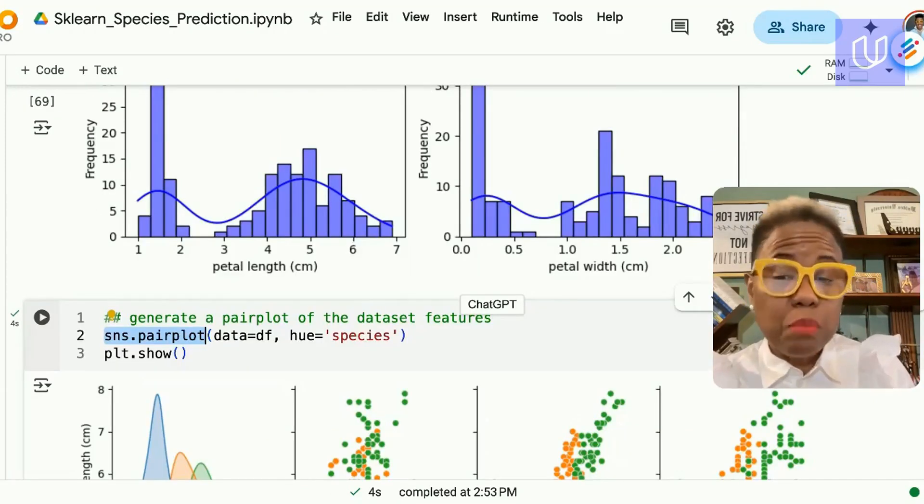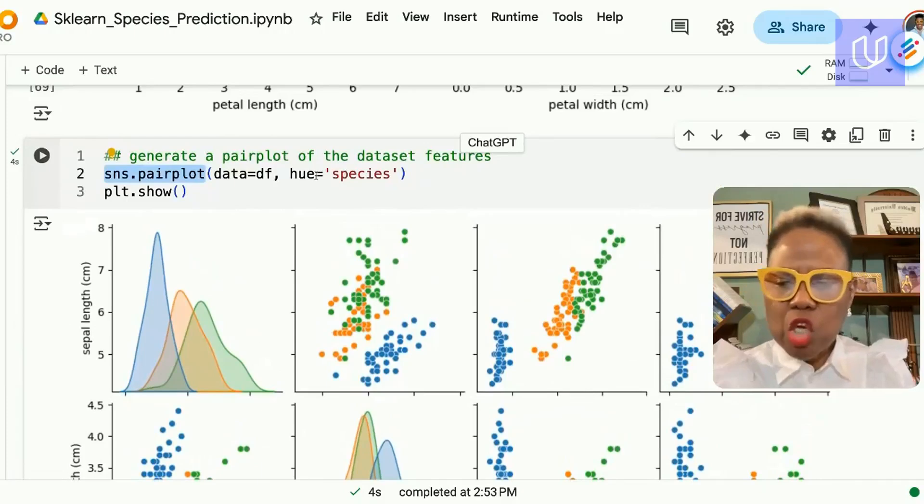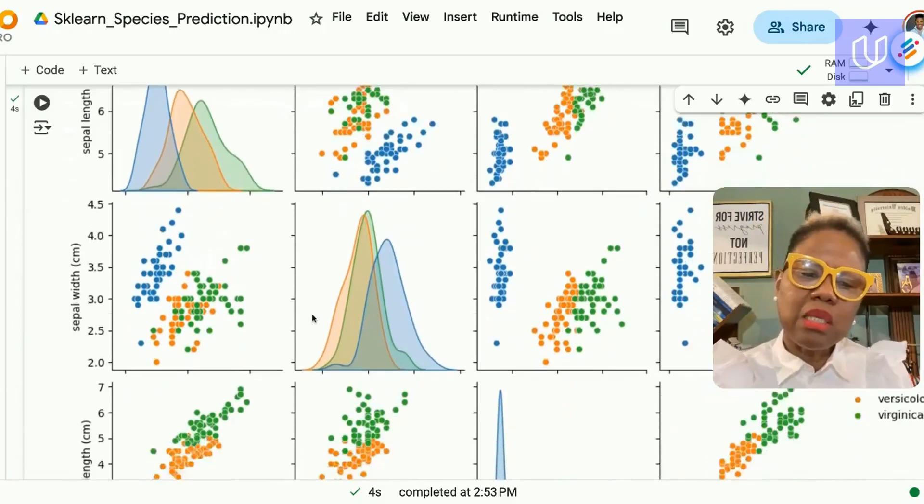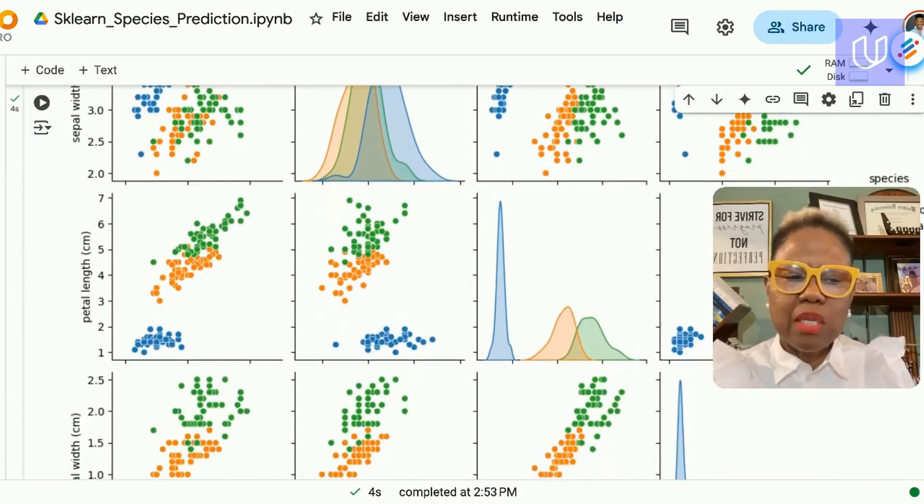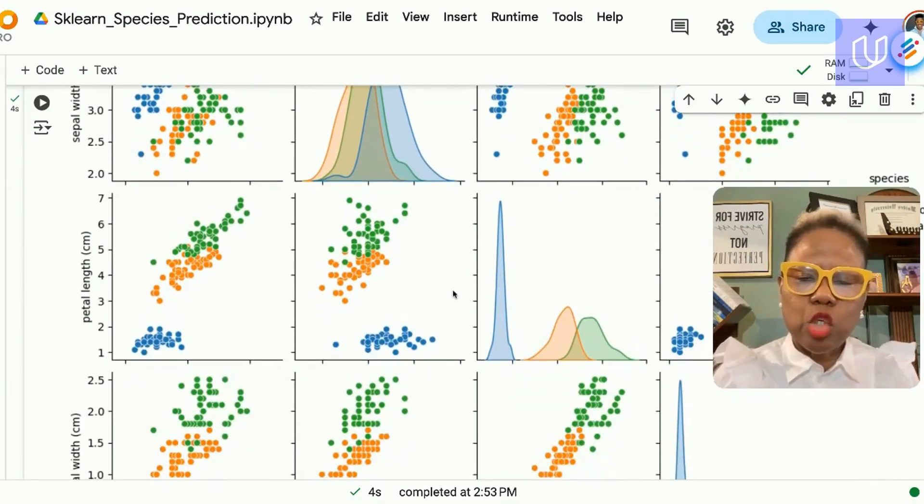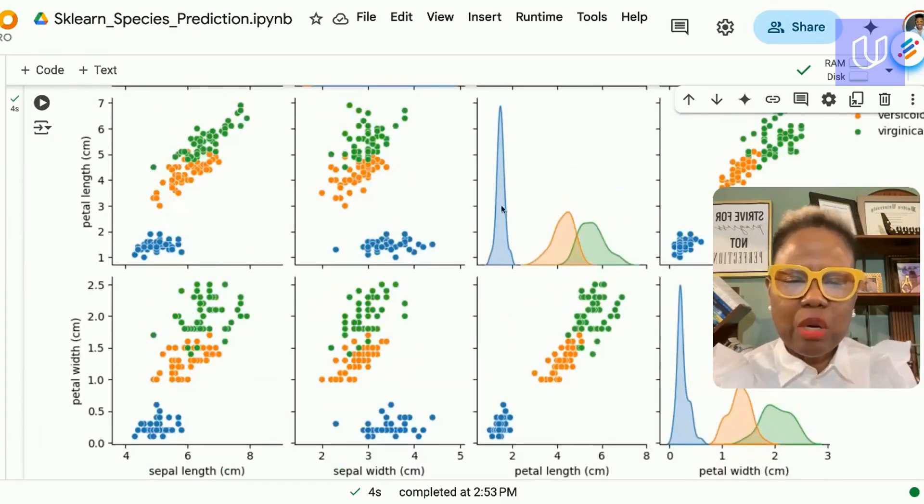The pair plot function from the seaborn module shows us when we use the species or the target as the hue we can see all of the flowers separated by colors and we can tell right away that setosa are the smaller of the flowers because they are all concentrated in the lower left hand portion of the scatter plots and the histogram for the setosa is narrower and taller so the variability for those flowers is much smaller compared to the other.